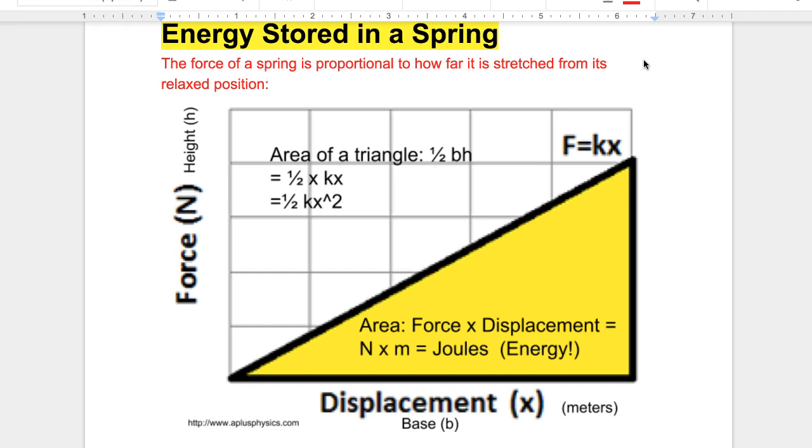Transfer of energy is work. We know it's force times displacement. If we look at the force here vertically and the displacement horizontally, the displacement is x, the distance in meters. The force we found was kx, or negative kx.